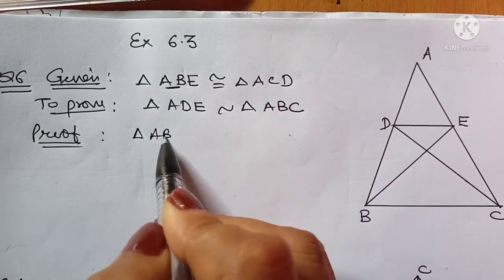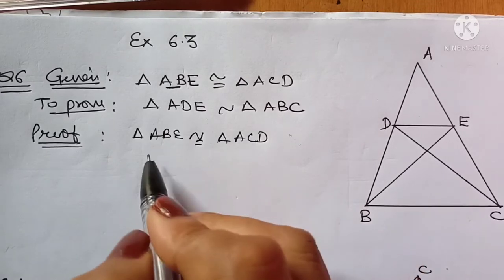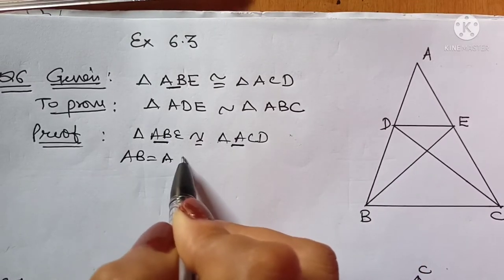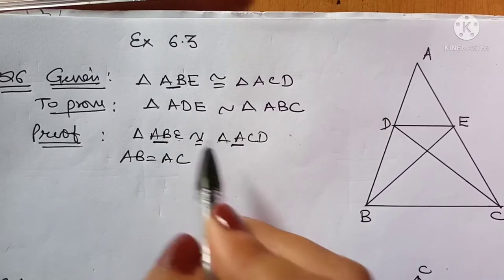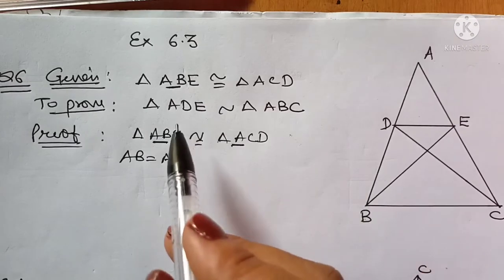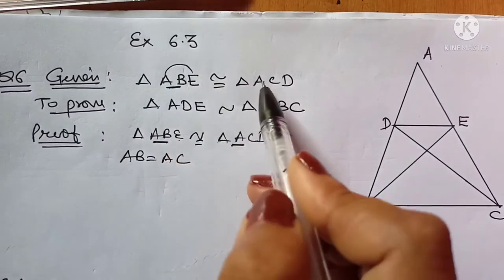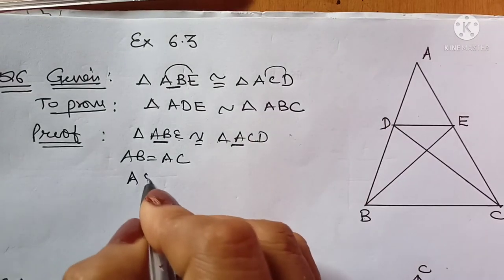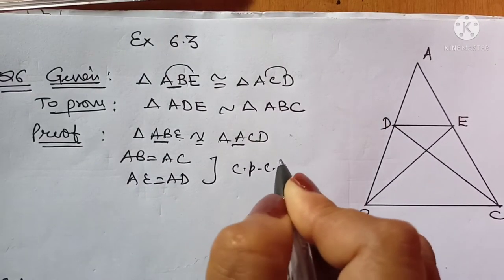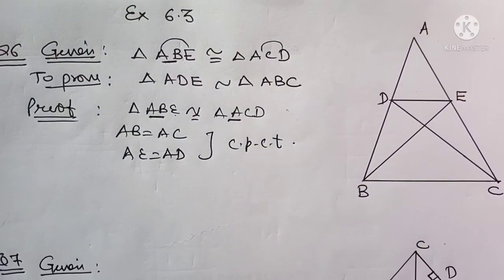Since triangle ABE is congruent to triangle ACD, we get from the first two corresponding alphabets: AB is equal to AC, and BE is equal to CD. Also, the corner elements give us AE is equal to AD. These two results we get by CPCT — the corresponding parts of congruent triangles.